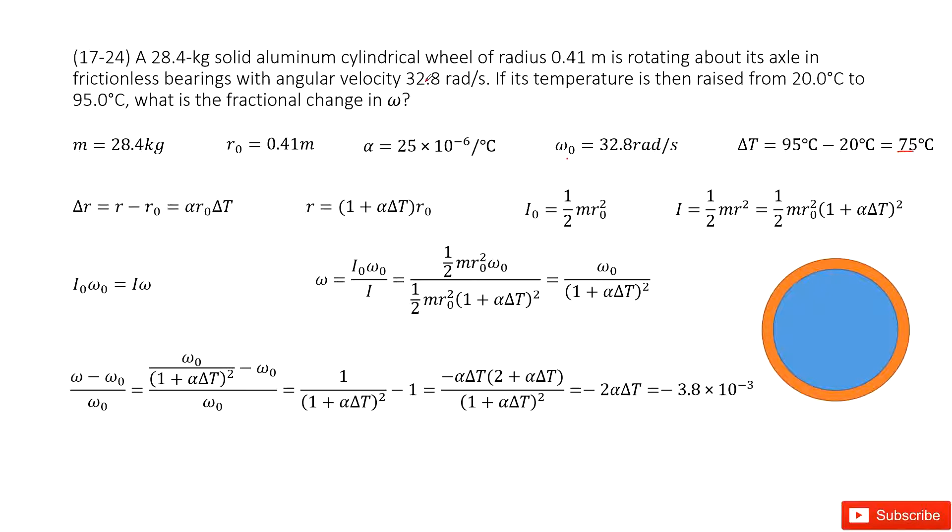And then it asks you to find the fractional change in omega. But there are also some keywords we need to take care of. This part tells us the materials for this cylindrical wheel. And this can lead us to find the thermal expansion coefficient. You can check your textbook. It is alpha for these materials.